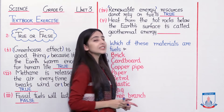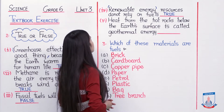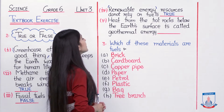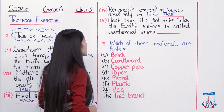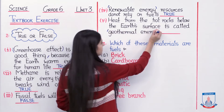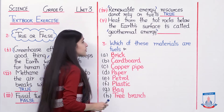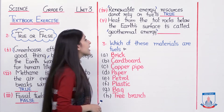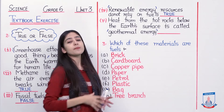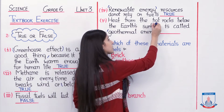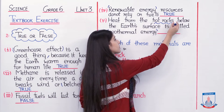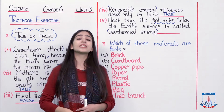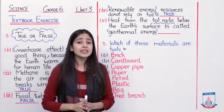Moving to the last true or false statement — statement number 5: 'Heat from the hot rocks below the earth's surface is called geothermal energy.' Geothermal energy is energy that we find from hot rocks below the earth's surface. The word 'thermal' comes from heat and 'geo' from earth.